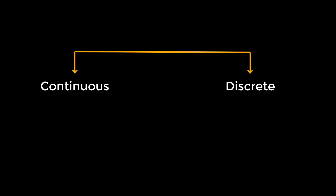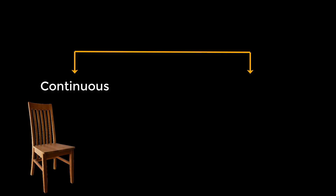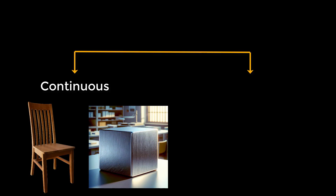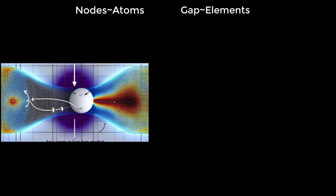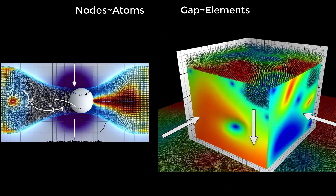Let's now understand what it means to discretize a problem. There are two approaches to solve any problem: the continuous approach and the discrete approach. All real-life components are continuous — take the chair you are sitting on, it doesn't show any obvious breaks in its material. Solving a real-life problem with a continuous material approach is difficult. The basis of all numerical methods is to simplify the problem by discretizing it. Nodes work like atoms and the gap between the nodes is filled by an entity called an element. Calculations are made at the nodes and results are interpolated for the elements.